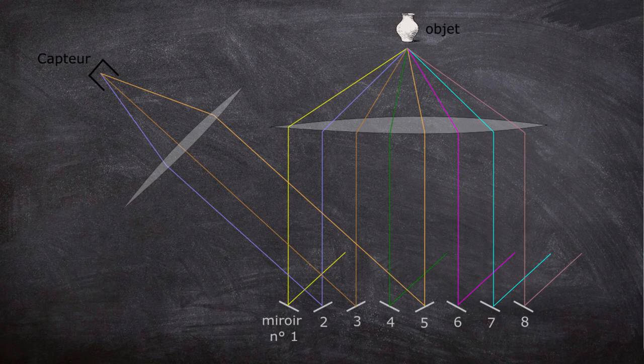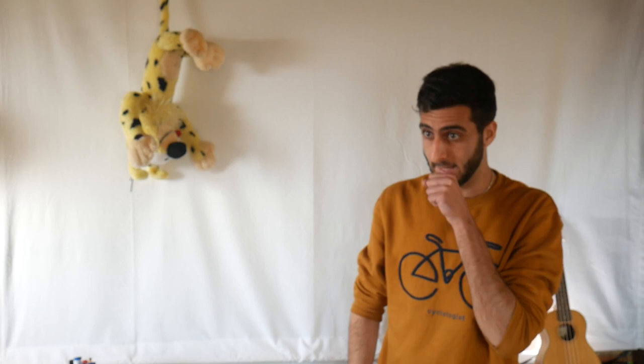Bon, quitte à avoir un système de miroirs plutôt qu'une grille de capteurs, on va quand même essayer d'en tirer parti. On ne va pas se limiter à ne tourner qu'un seul miroir vers la gauche à la fois. Qu'est-ce qui se passe si on tourne plusieurs miroirs vers la gauche ? Par exemple, on a les miroirs 2, 3 et 5 qui sont tournés vers la gauche, tous les autres étant tournés vers la droite. Ça veut dire que le capteur reçoit les rayons lumineux qui arrivent sur les miroirs 2, 3 et 5. La quantité de lumière correspond donc à la somme des quantités de lumière destinées aux pixels 2, 3 et 5. On obtient une addition du type : pixel 2 + pixel 3 + pixel 5 = une certaine valeur mesurée, disons par exemple 15. On répète ça pour d'autres configurations des miroirs et à la fin on obtient toute une liste d'additions.